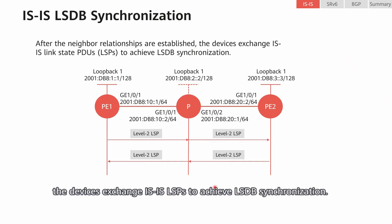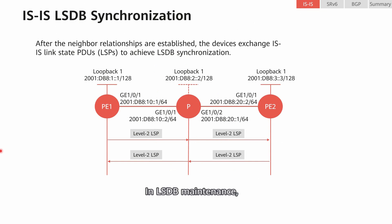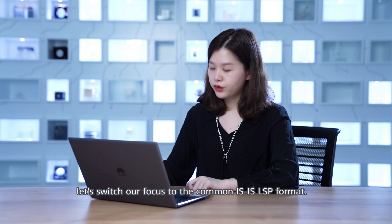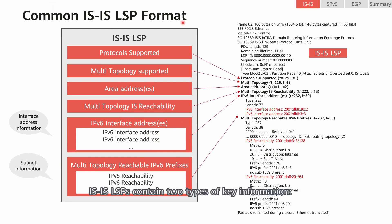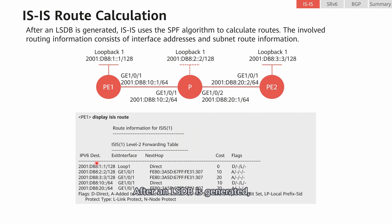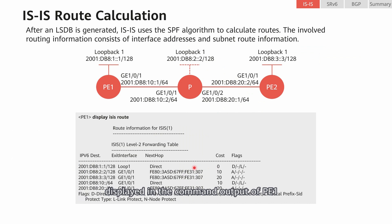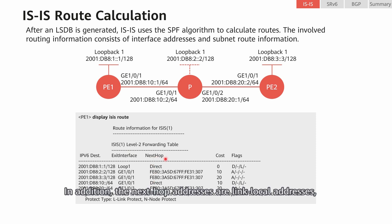After neighbor relationships are established, the devices exchange IS-IS LSPs to achieve LSDB synchronization. In LSDB maintenance, IS-IS may also use CSNPs and PSNPs to maintain LSDB integrity and synchronization. IS-IS LSPs contain two types of key information: interface addresses and subnet information. After an LSDB is generated, IS-IS uses the SPF algorithm to calculate routes. The routing information consists of interface addresses and subnet route information. We can see that IS-IS routing information displayed in the command output of P1 is consistent with that carried in corresponding IS-IS LSPs. The next-hop addresses are link-local addresses, not user-configured global unicast addresses.